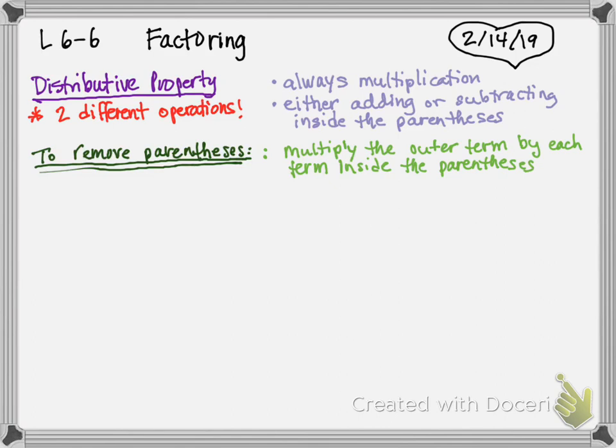What we've talked about so far and what you practiced yesterday was how to remove parentheses. What we did is we multiply the outer term by each term inside the parentheses. We can have more than two terms inside the parentheses. We just keep multiplying that outside term times everything inside the parentheses. I'm going to give you a couple of examples, and then we're going to talk about factoring.